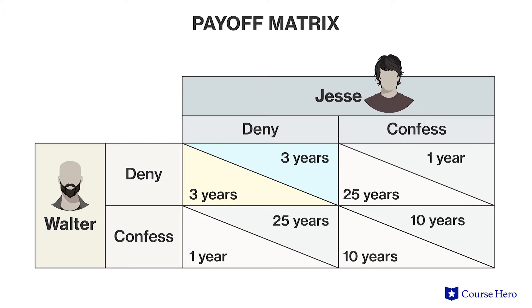Conversely, if both confess to being involved in the drug trade, both receive a 10-year sentence, as seen in the bottom right corner of the matrix. The other two quadrants represent cases where one player confesses while the other remains silent. In the upper right corner, Jesse confesses and Walter denies involvement — Walter receives 25 years and Jesse walks away after only one year in jail. The opposite is the case in the lower left corner: Walter confesses and gets a one-year sentence, while Jesse remains quiet and gets sent away for 25 years.